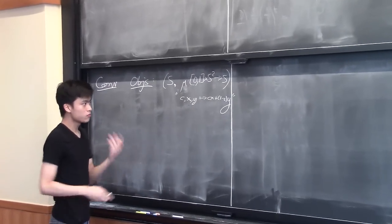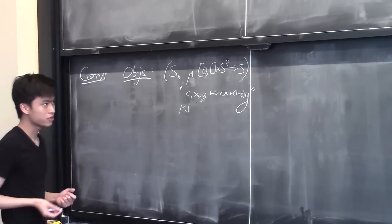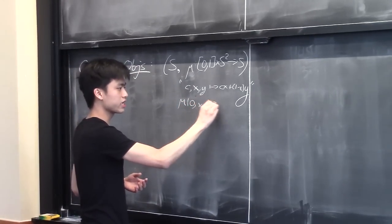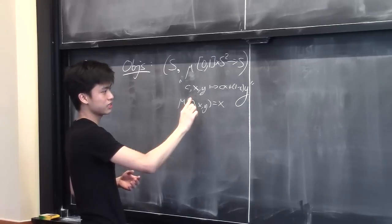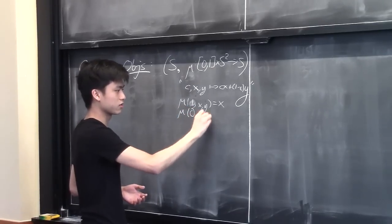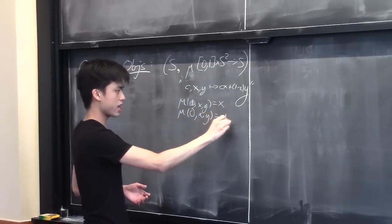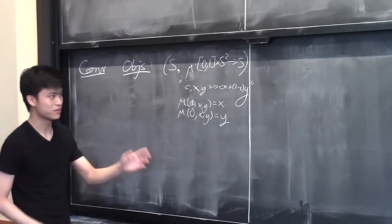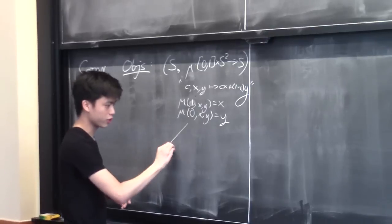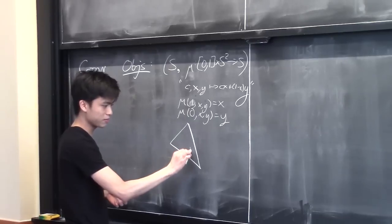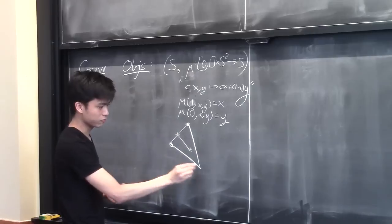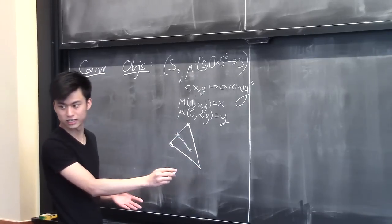What does this have to satisfy? All we require — and this follows from the Eilenberg-Moore construction — is that mu(1, x, y) = x and mu(0, x, y) = y, and furthermore that it's distributive in the right way. So if you want to get a combination like this, first you can get a combination between two points, and then after that you can combine this with another point in whatever ratio is needed.